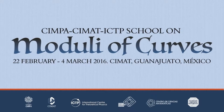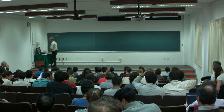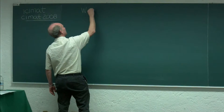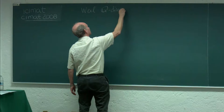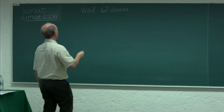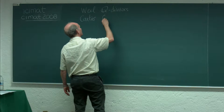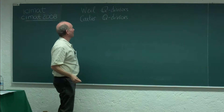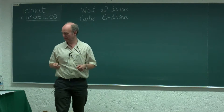I will continue today talking about divisors. Remember that last time we defined Weil divisors, or Q-divisors. I also explained that this is not the right notion — you can do much more with Cartier divisors. You can go from a Cartier divisor to a Weil divisor, at least when the variety is normal.